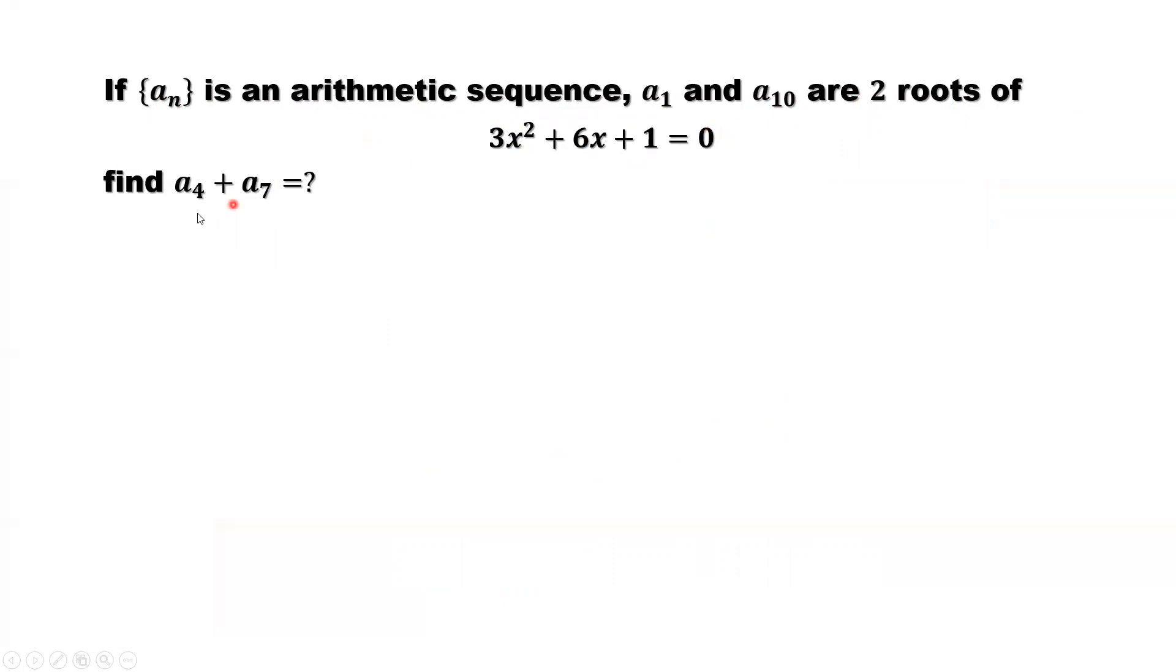Then we need to find the fourth term plus seventh term equals what. Now look at this condition. A1 and A10 are two roots of this. What does this mean?